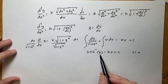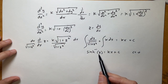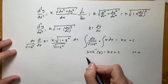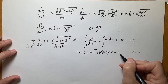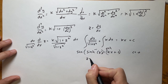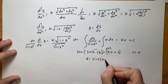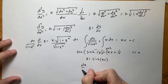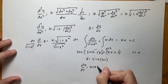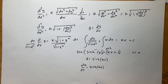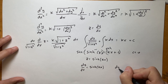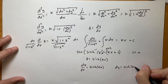Taking the hyperbolic sine of both sides, z equals sinh(kx). That's where it's really nice to have c equal to zero, otherwise things get complicated. Substituting back: dy/dx equals sinh(kx). Separating variables again, dy equals sinh(kx) dx, and integrating both sides gives y equals (1/k) cosh(kx) plus c.